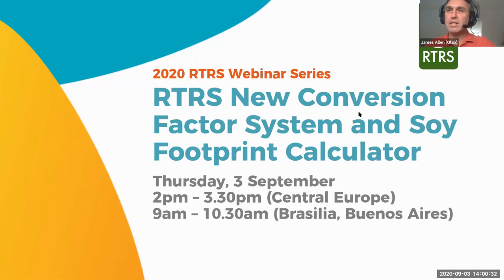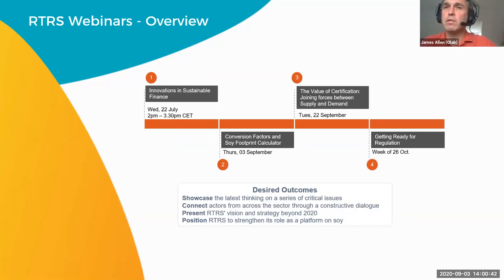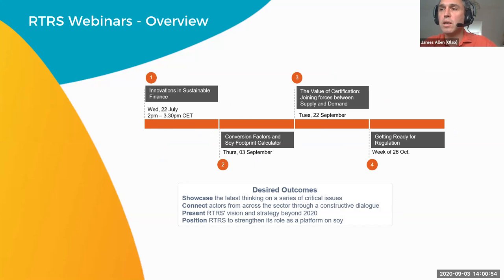This is a series of webinars. Just before we start, I'd like to remind people about the other webinars in this series. We had a fantastic webinar in July looking at innovations in sustainable finance. Later this month, we're going to be talking to actors across the supply chain about the value of certification as we see increased demand for RTRS credits and chain of custody. And then in October, we have a webinar looking at regulation, particularly from a European perspective, and how that impacts on all of us across the soy supply chain.